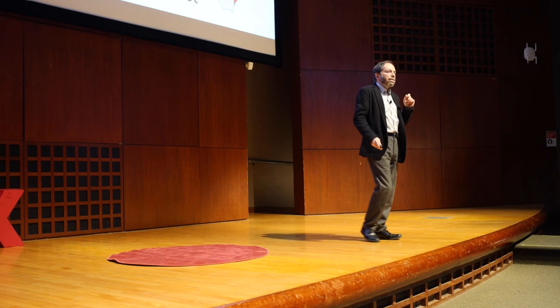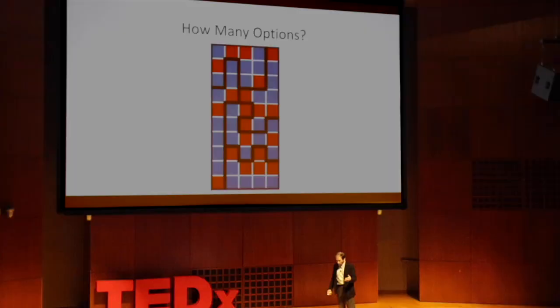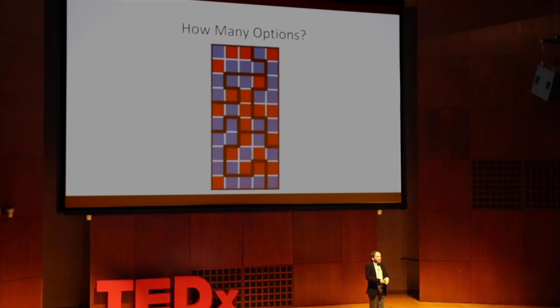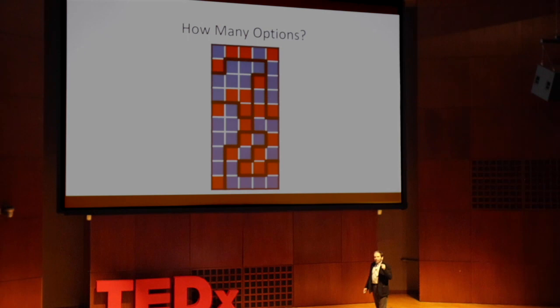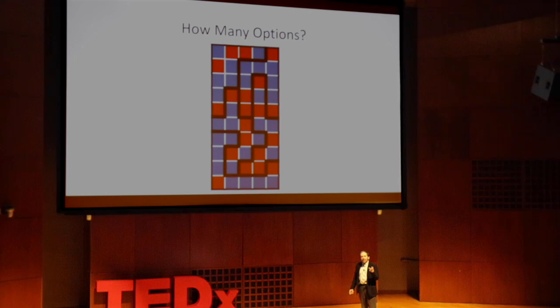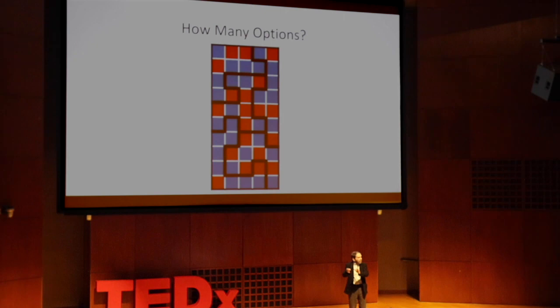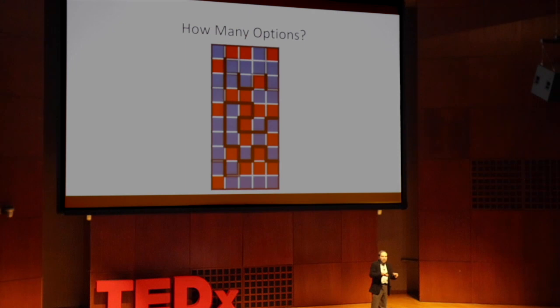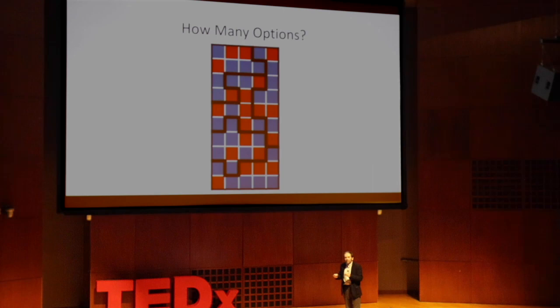One thing I haven't talked about is how do we actually do this computationally. Even in this 50-precinct toy example, there are scores and scores of different possible state plans. For North Carolina, which has 2,000 precincts rather than just 50, there are literally billions and billions of possible state maps.